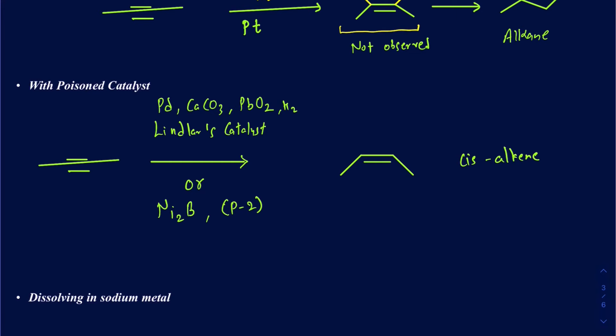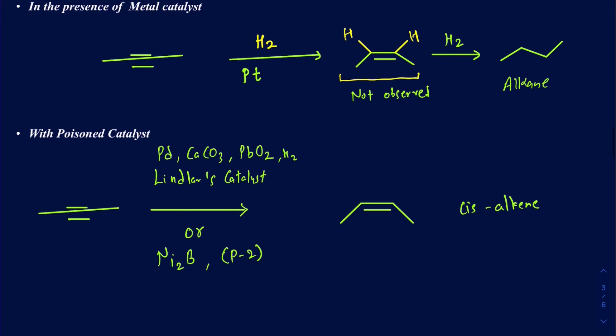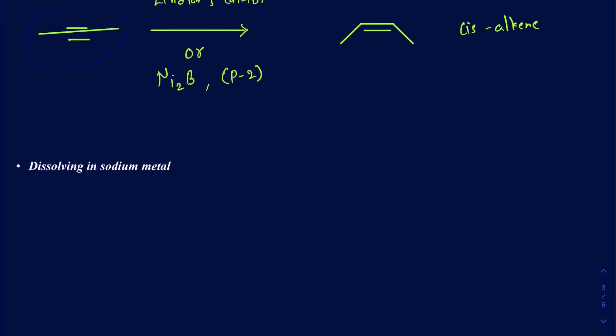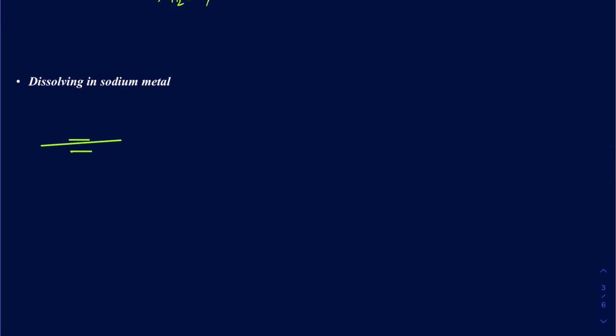Lindlar's catalyst will not produce the alkane — if you need to go further to make the alkane, you'd have to use regular H₂ with a platinum catalyst. The third reduction method uses sodium metal dissolved in liquid ammonia. Be careful not to confuse this with NaNH₂, which was used to deprotonate the alkyne to make an alkynide nucleophile. Sodium metal in liquid ammonia also makes an alkene, but the key difference is that it makes the trans-alkene instead of the cis-alkene.